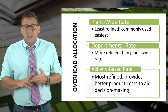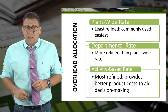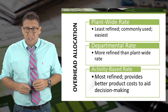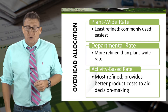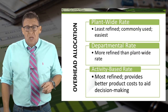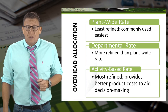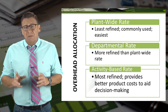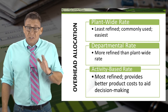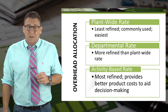There are three common ways to allocate manufacturing overhead to products. The most common is the plant-wide rate, which is what we earlier described as the predetermined overhead rate. Another method is departmental rates. Finally, the most refined method is activity-based costing. This video will focus on the activity-based rate method.